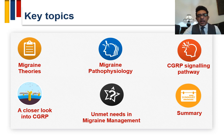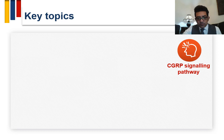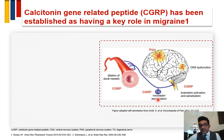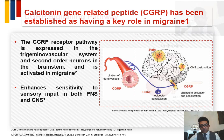Moving into the CGRP signaling pathway: CGRP receptors are present everywhere along the migraine pathophysiology pathway — around the meningeal vessels, at the trigeminal ganglion, and centrally in the brainstem and thalamus.